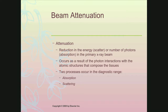Attenuation is a result of the photon interacting with the different structures in the anatomy we're imaging. Those two processes are photoelectric absorption and Compton scattering. Remember, a photon can only do three things: it can pass through unaffected, which is transmission; it can be photoelectrically absorbed; or it can undergo Compton scatter. So when it says absorption, that's photoelectric absorption, and when it says scattering, that is Compton scattering.